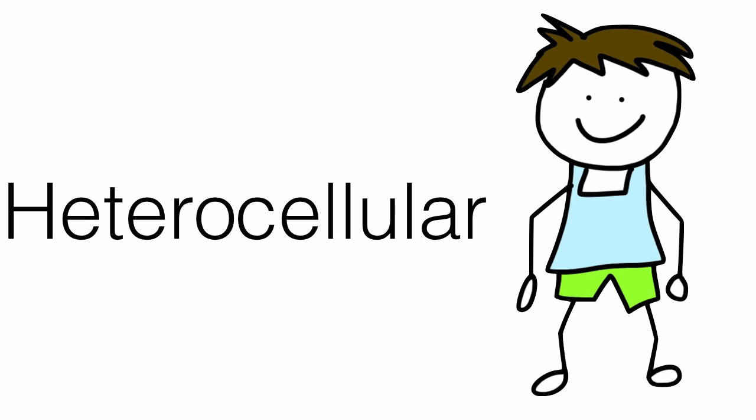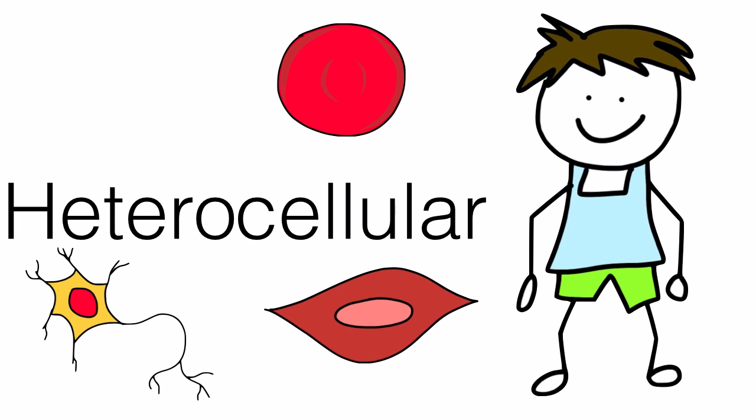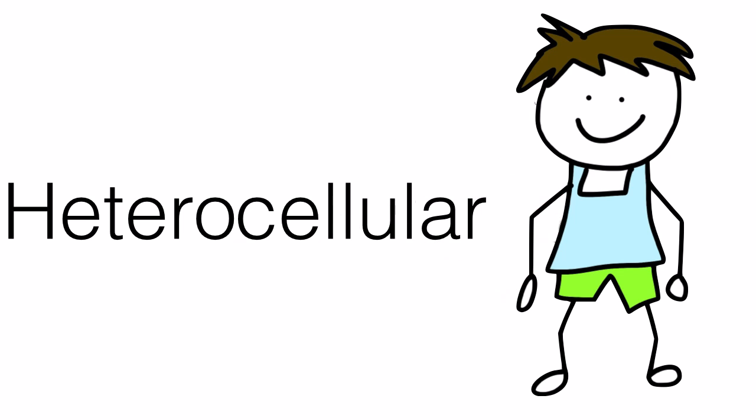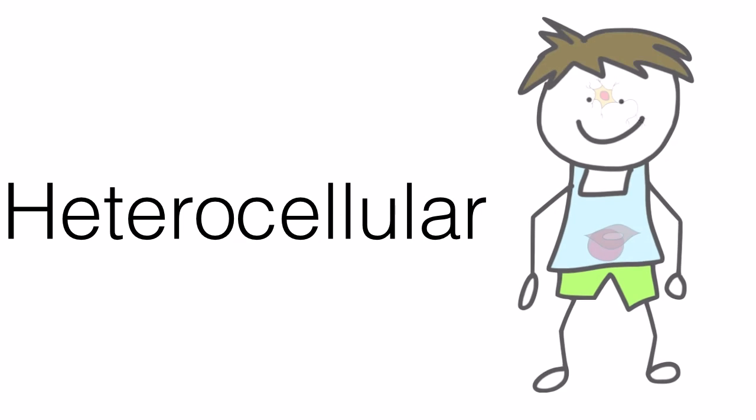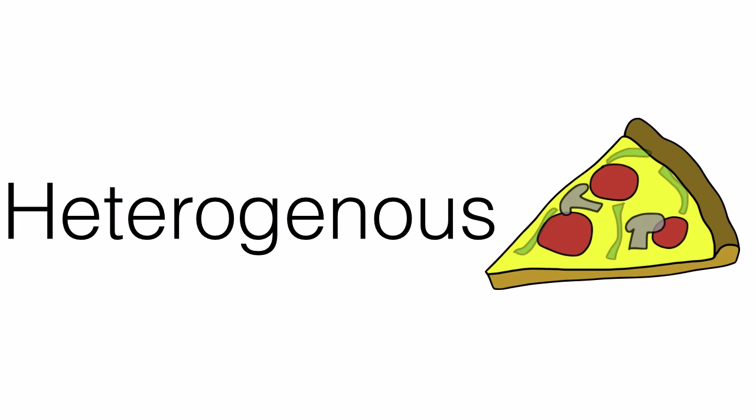Heterocellular — this word used in biology means to be composed of many different types of cells. Humans are made of many different types of cells. Heterogeneous — this word can be used to describe a mixture of different materials. A pizza is heterogeneous because it is made up of many different ingredients.